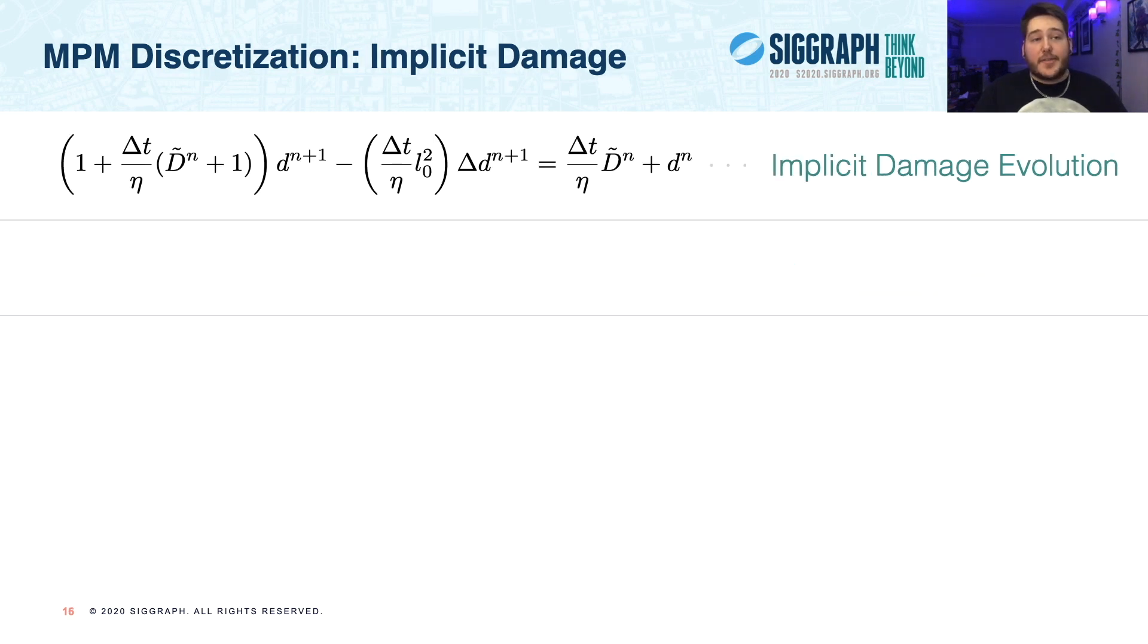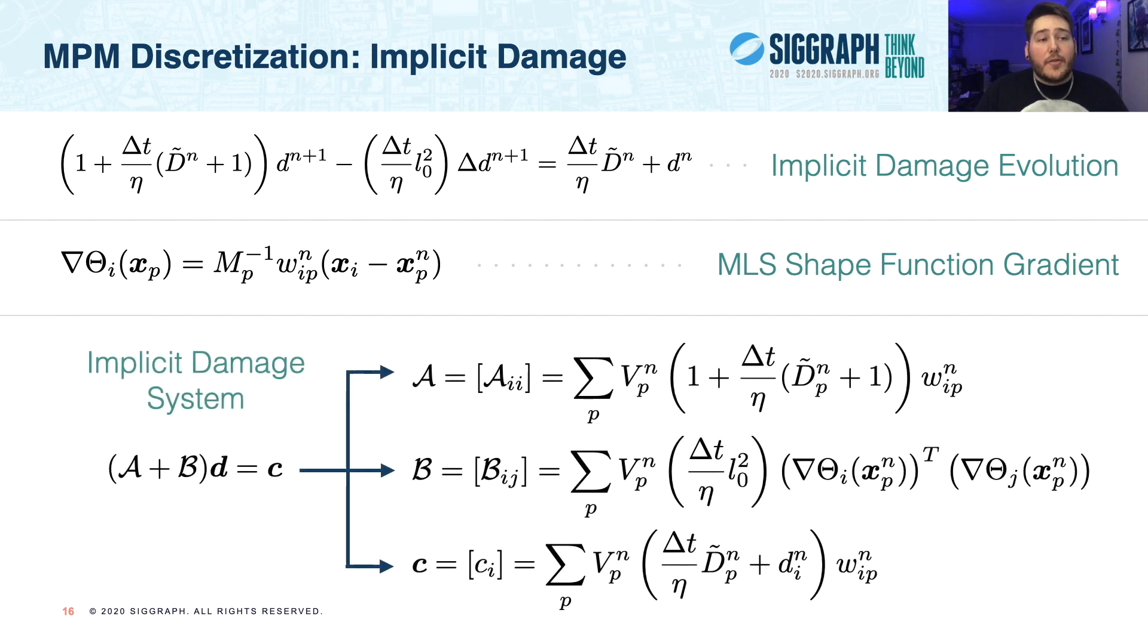Next, let's look at how we implicitly discretize our damage evolution. At the top, we present our implicit damage evolution rule, and if you're familiar with cdmpm, this might already look a little familiar to you. We further write a weak form of this evolution, and then discretize it using the MLS shape function at its gradient, seen in the second row as nabla theta. And similarly to pffmpm, we end up with a system that strongly resembles a heat equation in that we have a diagonal matrix as the first term, a Laplacian as the second, and a scalar as the right-hand side. Fortunately, this form means that we can solve this using an additive method. And in the third row, we show the form of this discretized system, where d is the vector of unknown grid damage values, a is the diagonal matrix, b is the npm discrete Laplace operator in terms of the MLS shape function gradient, and c is the vector of right-hand terms.